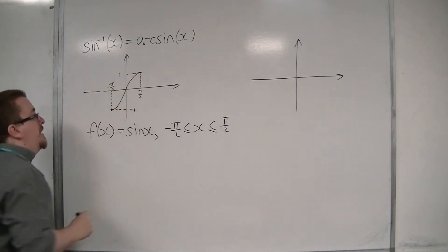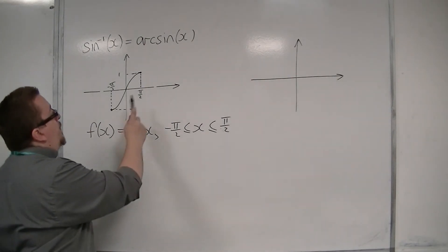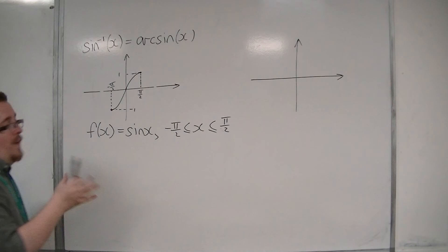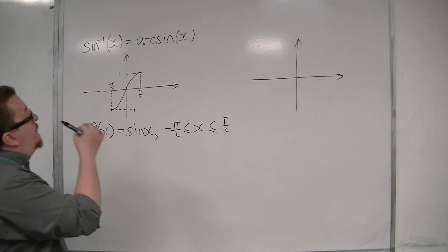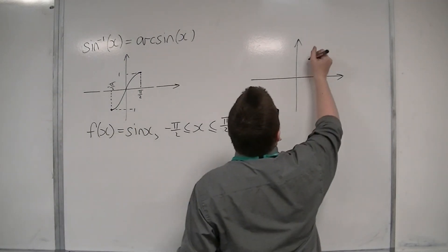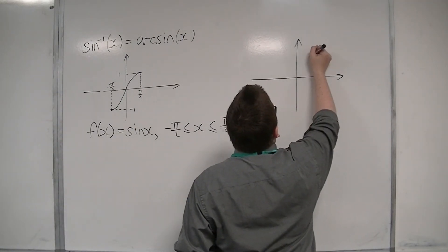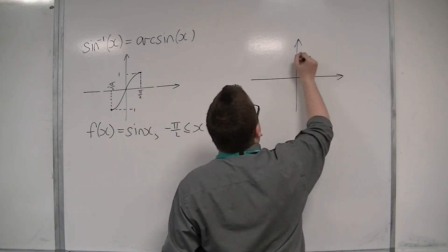And what we can do is use our understanding of domain and range here. If the point (π/2, 1) is reflected in the line y = x, then that means the new point is (1, π/2). So the curve, there's my point of (1, π/2).